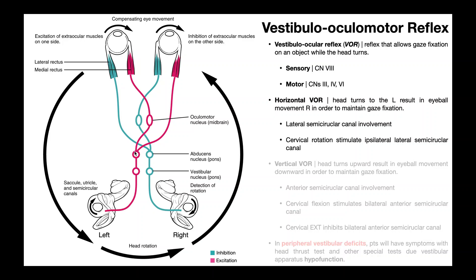The abducens nuclei, associated with cranial nerve 6, are located in the pons. The oculomotor nuclei, associated with cranial nerve 3, are located in the midbrain. There are also trochlear nuclei associated with cranial nerve 4, but for simplicity these are not shown in the diagram.